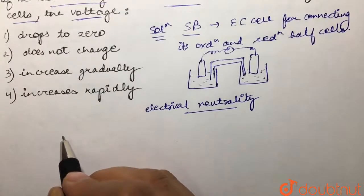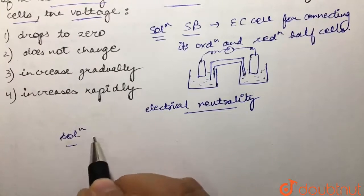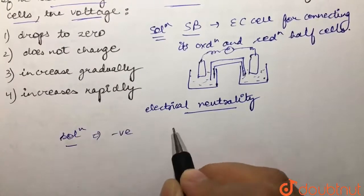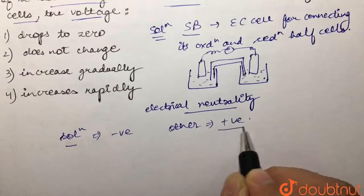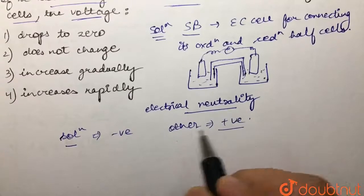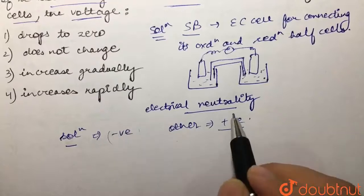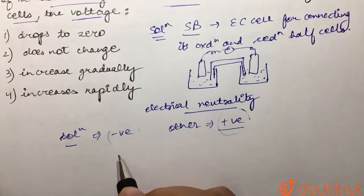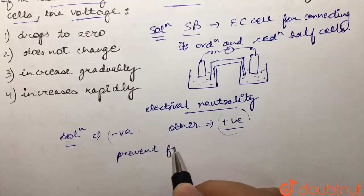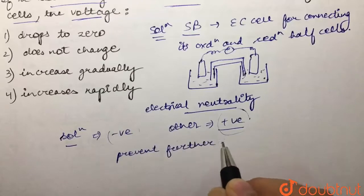happen is that the solution in one half cell would accumulate a negative charge, and in the other, it would accumulate a positive charge as the reaction proceeds. There would be accumulation of negative and positive charges in our half cell reactions, which would quickly prevent further reaction. What is